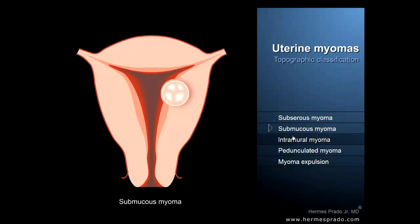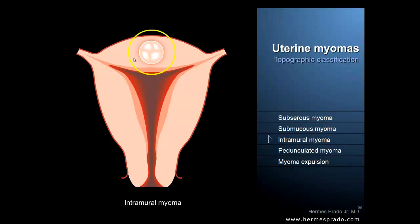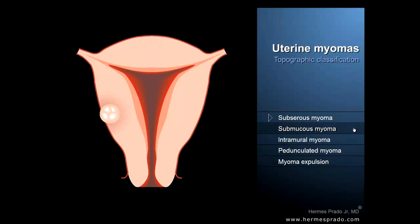And finally, if the tumor grows within the muscular wall, we call it an intramural fibroid or intramural myoma.